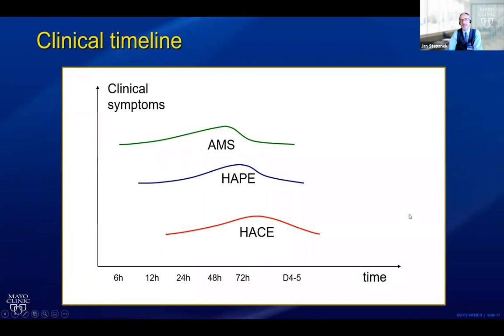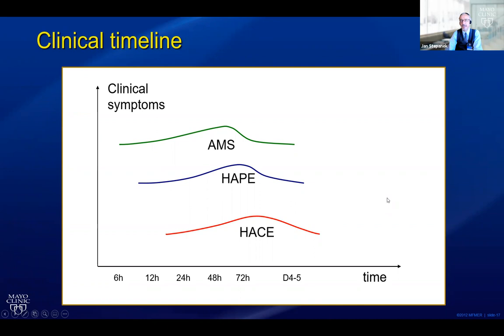The timeline of when these disorders arise — there is not perfect data for this — but upon arrival to altitude, very quickly within a couple of hours you can start feeling headachy, dizzy, and mildly short of breath. That can be just regular mountain sickness. High altitude pulmonary edema immediately upon arrival is exceptionally rare; typically it takes 24 to 48 hours. Altitude cerebral edema is also somewhat delayed. This is important because you need to keep in mind your differential. Shortness of breath and cough at altitude can also be pulmonary emboli or pneumonia — not everything is altitude disease.